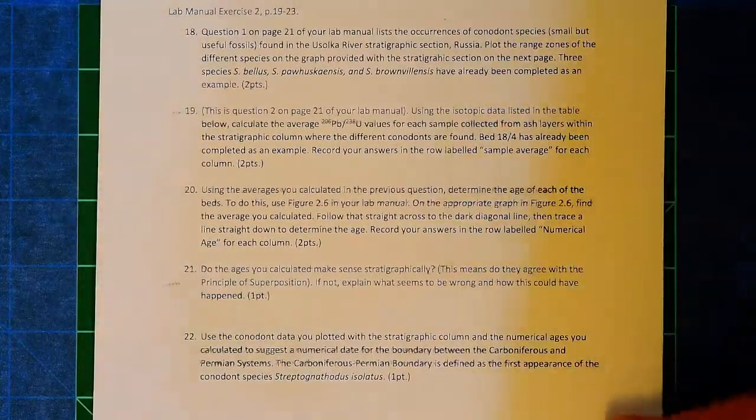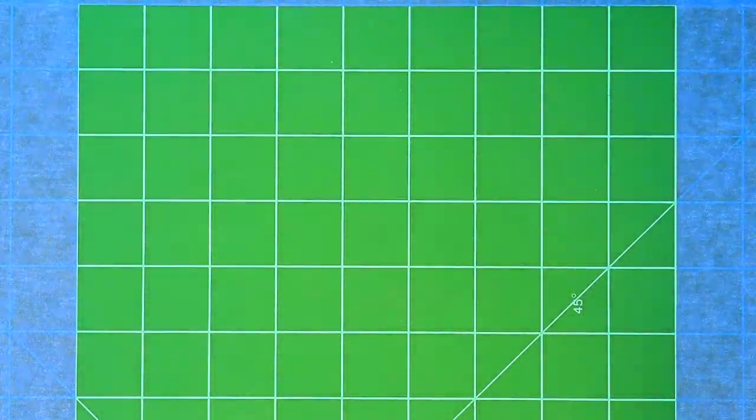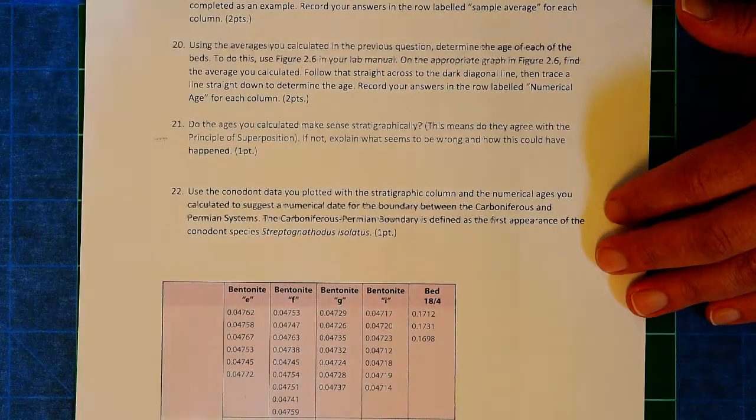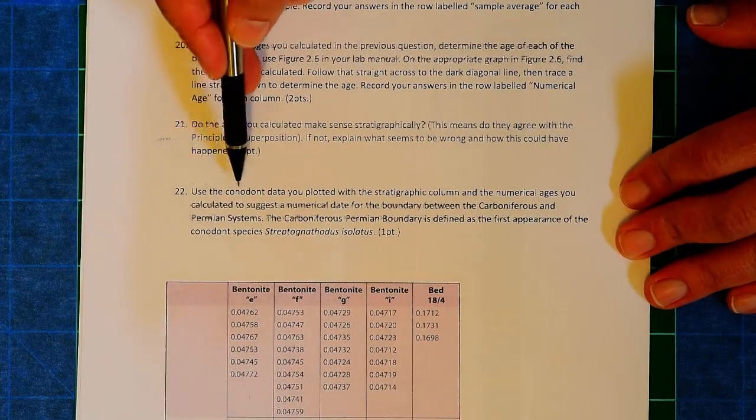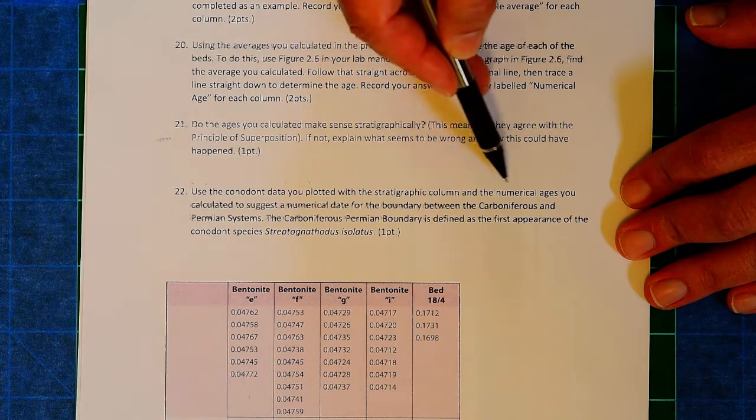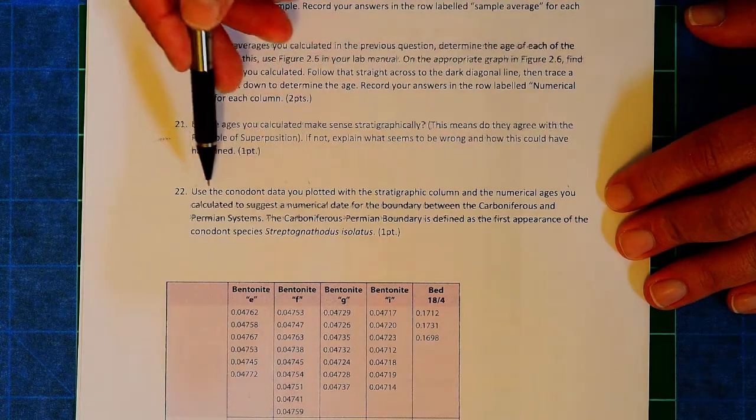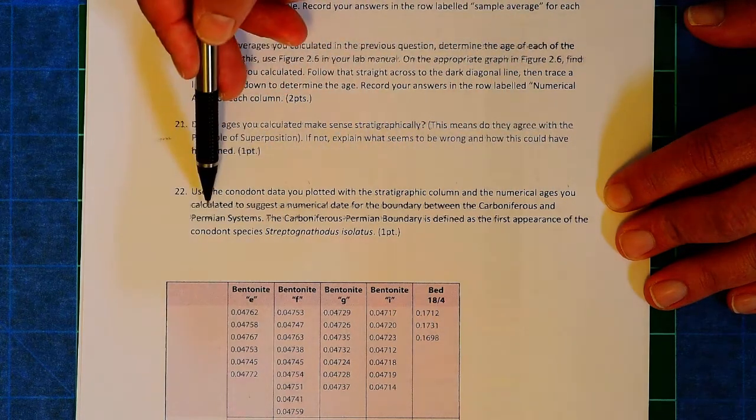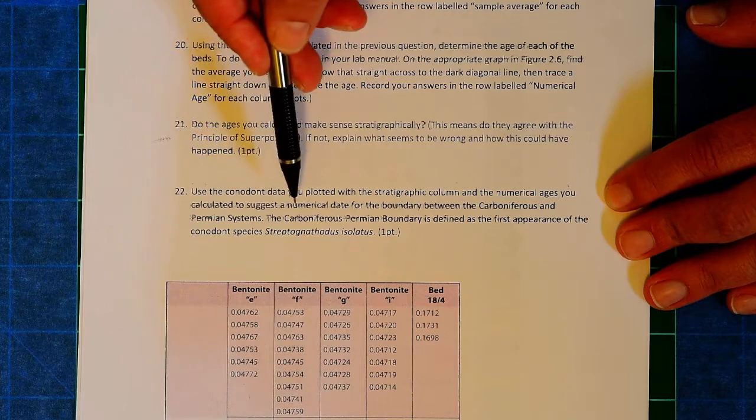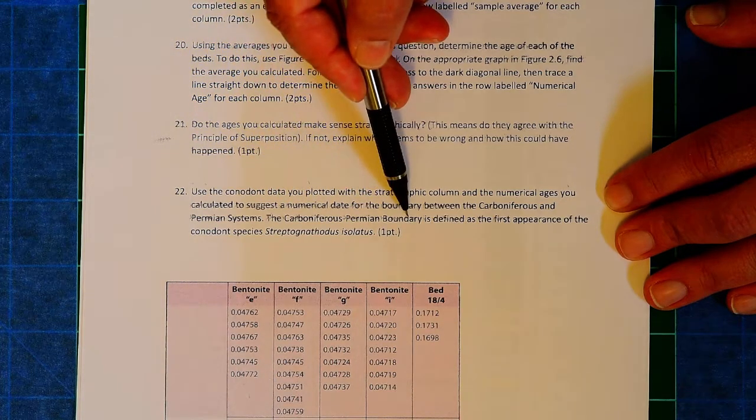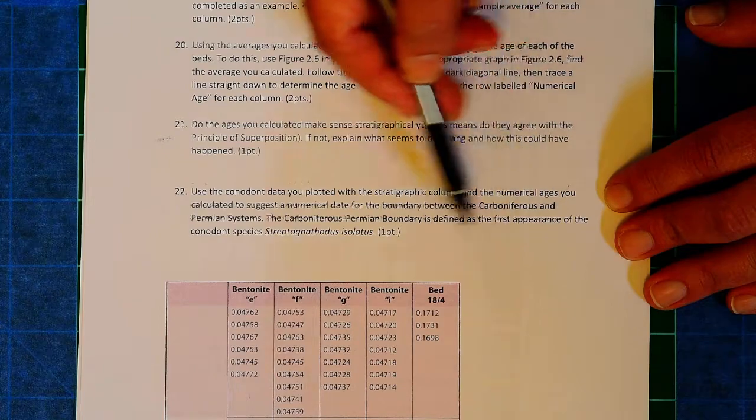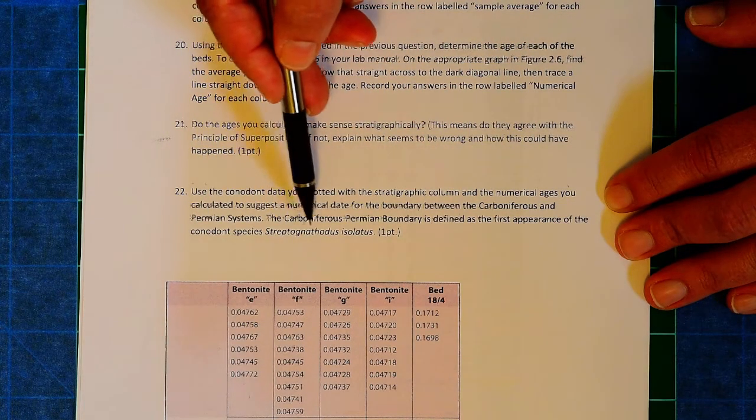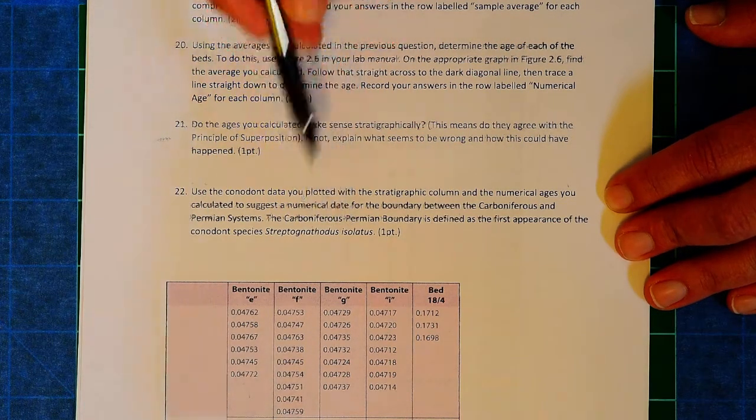And that's going to be having trouble reading upside down. So that's going to be what happens in question 20. Now, question 22 says, Use the Conodont data you plotted with the stratigraphic column and the numerical ages you calculated to suggest a numerical date for the boundary between the Carboniferous and Permian system. And the Carboniferous-Permian boundary is defined as the first appearance of the Conodont species, Strepnodathotus isolatus.